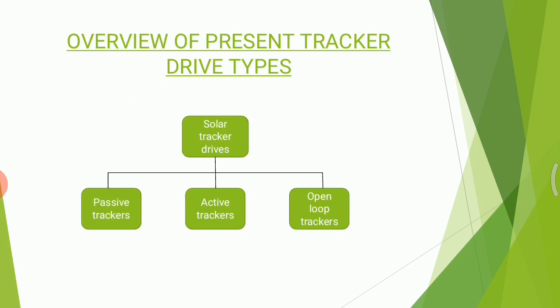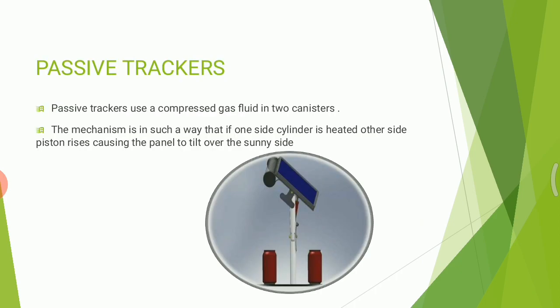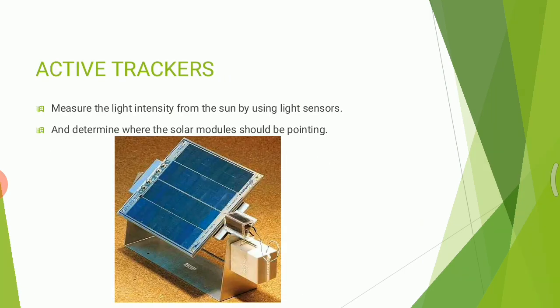Next, an overview of present tracker drive types. There are three types: passive trackers, active trackers, and open loop trackers. In passive trackers, as seen in the diagram, compressed gas fluid is used in two canisters. When one cylinder is heated, the other cylinder's piston rises, and the panel tilts accordingly.